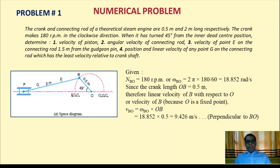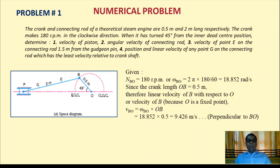First, we find omega, the angular velocity of B with respect to O: omega = 2π × 180 / 60 = 18.852 rad/s. Since crank length OB = 0.5 m, the linear velocity of B with respect to O is VBO = omega × OB = 18.852 × 0.5 = 9.426 m/s, acting perpendicular to link BO.